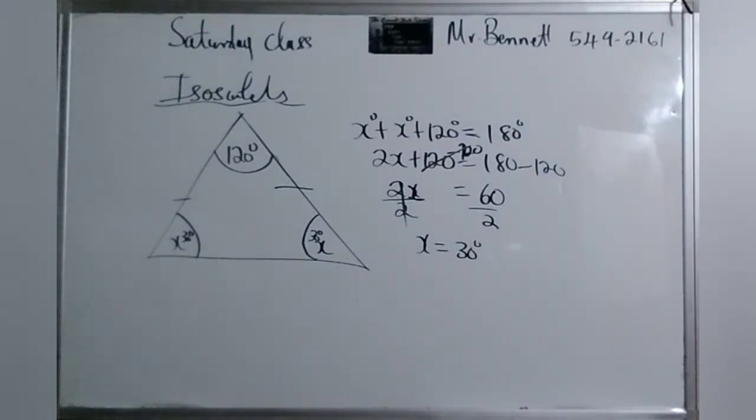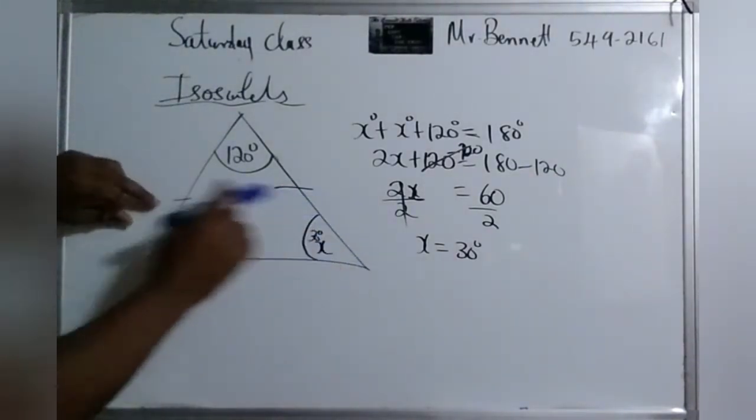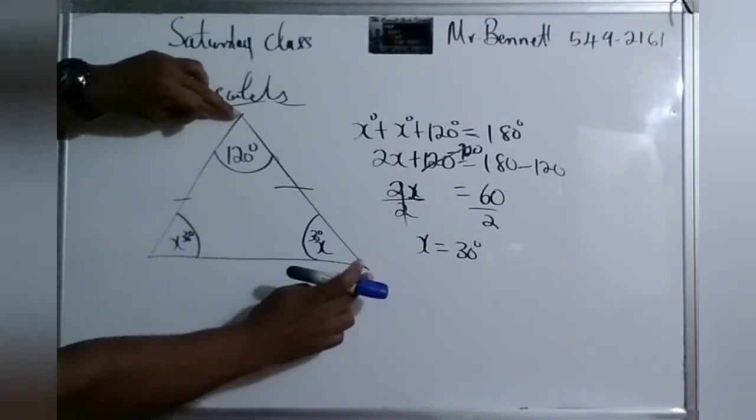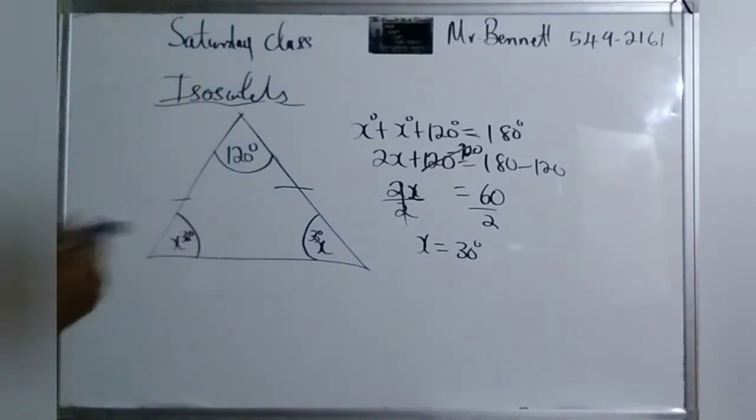Because they are both equal. And remember, this is the definition for an isosceles triangle. The base angles are equal. And the length, see here? This little stroke indicates that they are equal.